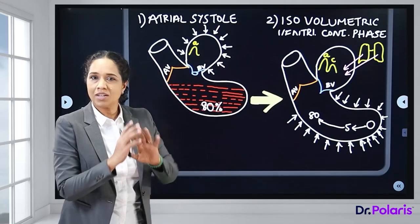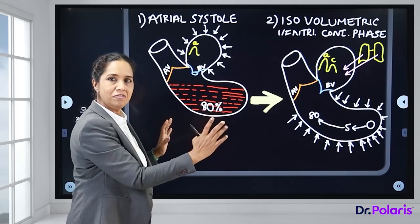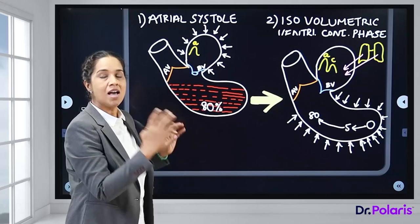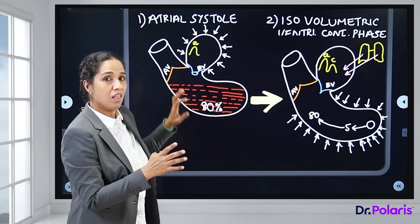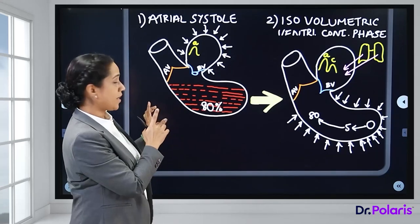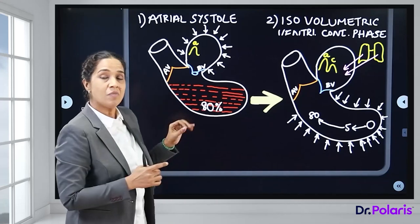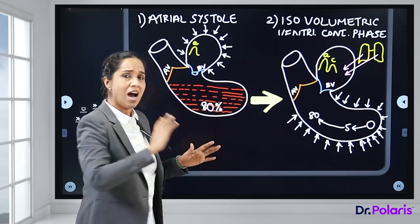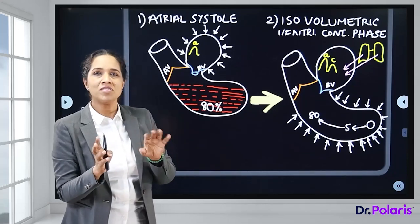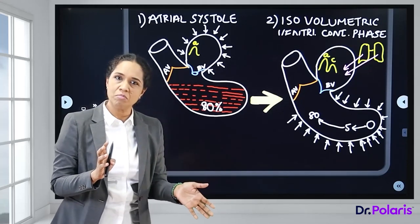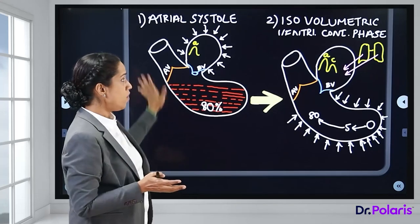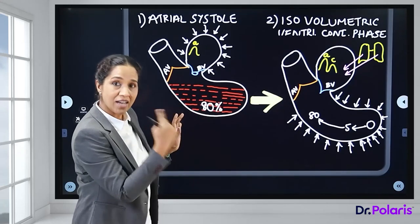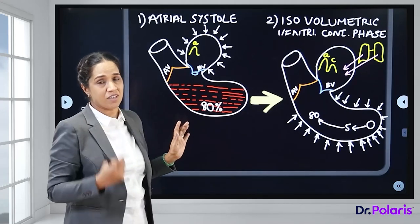To explain the cardiac cycle pictorially, a diagram of the left side of the heart has been drawn to save time. The left side is shown because the same changes occur on the right side, with only a difference in pressure values between the left and right chambers. Seven diagrams will be used to walk through the different phases.